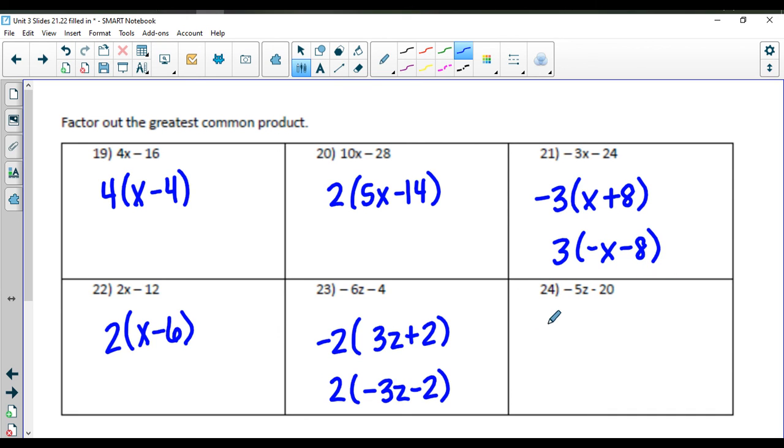Number twenty-four, we're going to factor out the negative five. So we're going to have z plus four. Or if you just factored out a five, you would have negative z, and you would have minus four inside parentheses here.